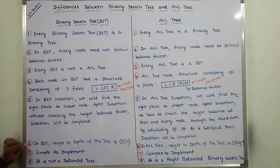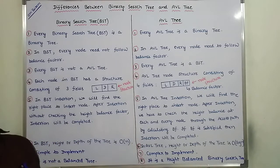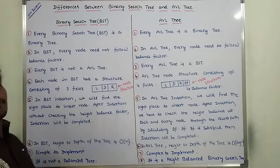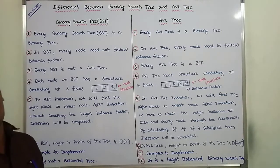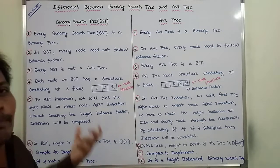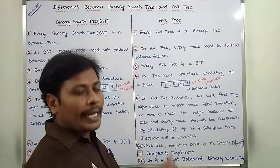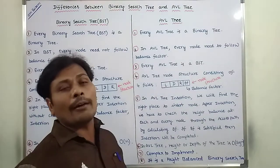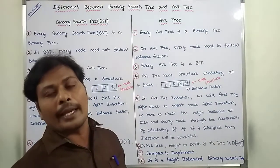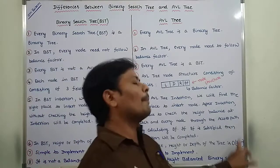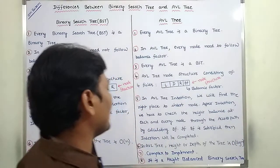Sixth point: the height or depth of the binary search tree is O(N), where N is the number of nodes. In the case of AVL tree, the height or depth of the AVL tree is approximately O(log N), where N is the number of nodes in the AVL tree.